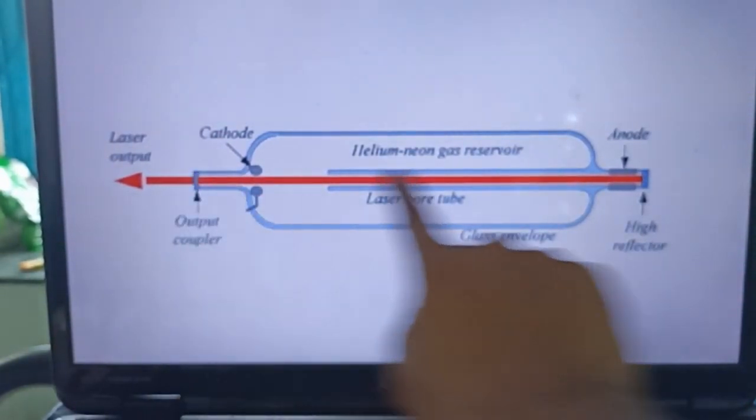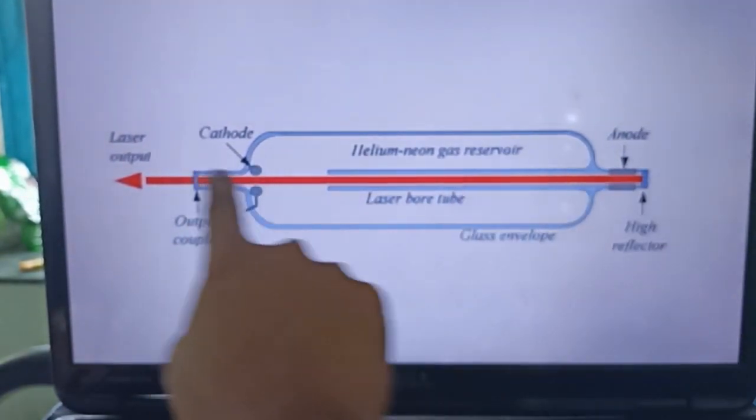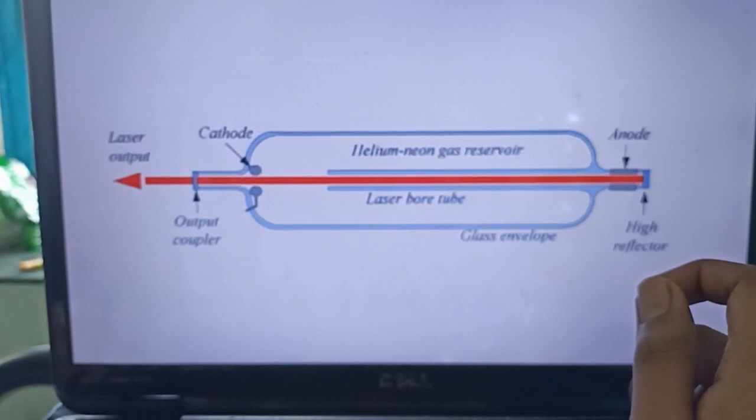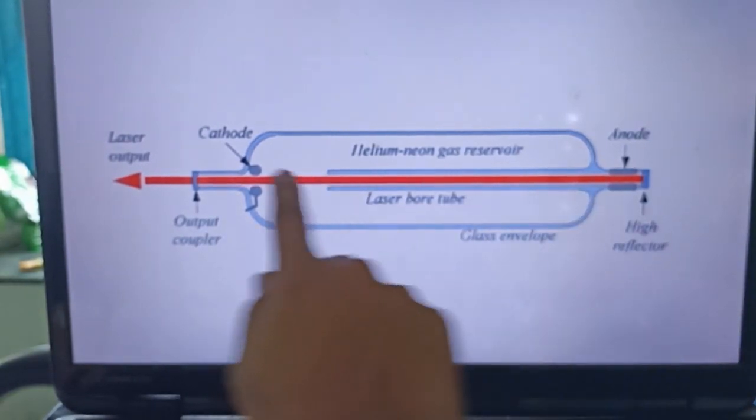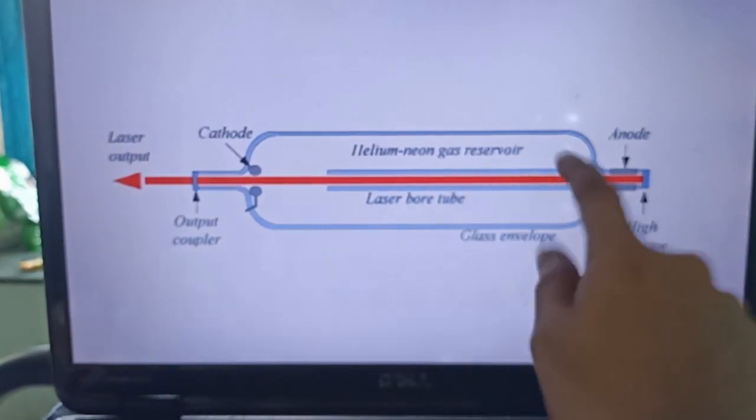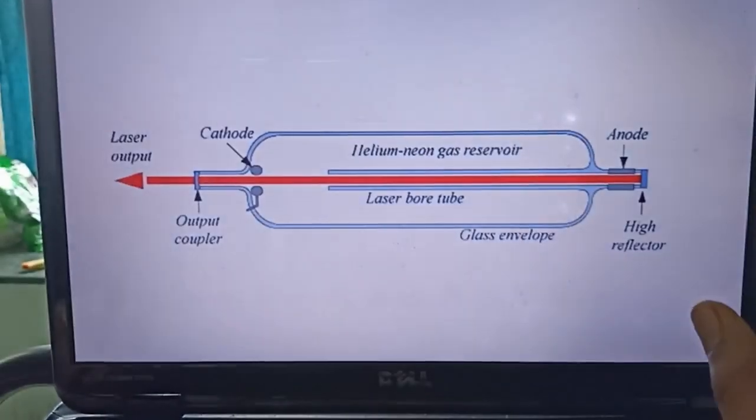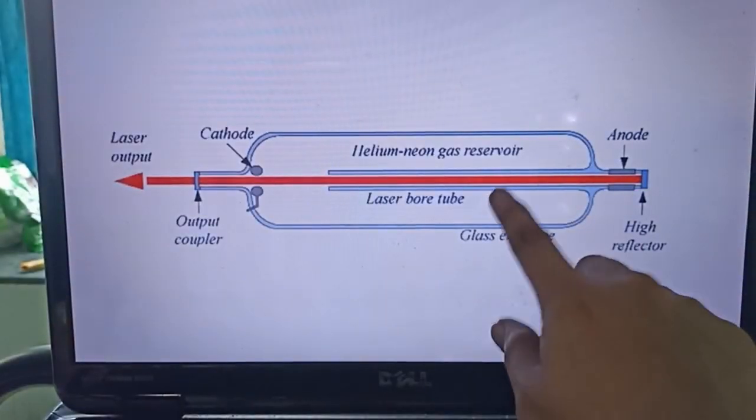Inside the laser, the light goes to and fro between the mirrors, meaning the 632.8 nanometer, and hence stimulated emission occurs. This is the basic construction of Helium-Neon laser which we are seeing here and also we have seen in the experiment.